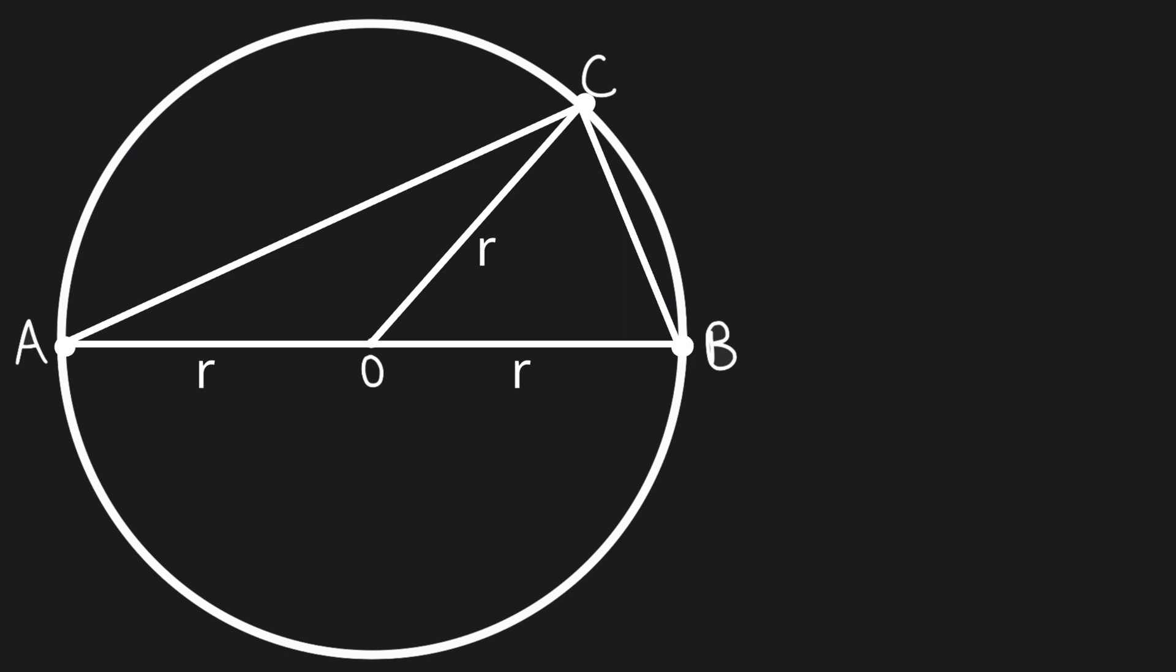A triangle with two sides of the same length is called an isosceles triangle. The base angles of an isosceles triangle have the same size.